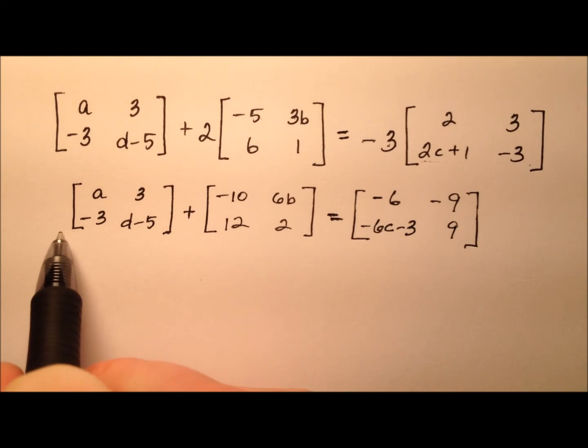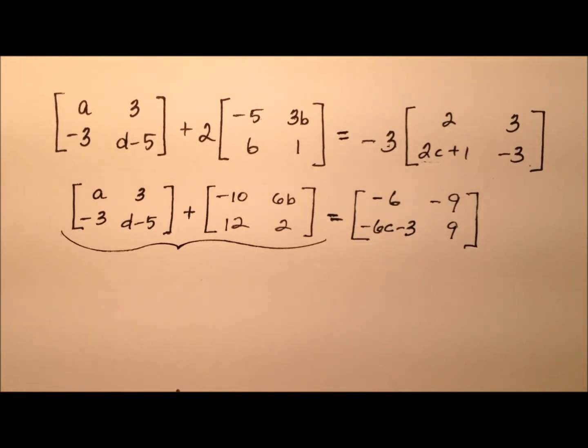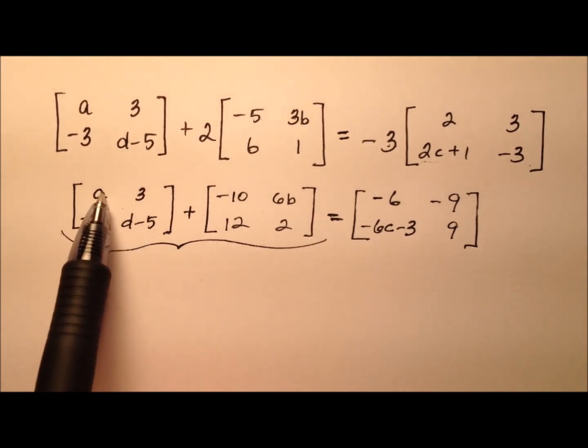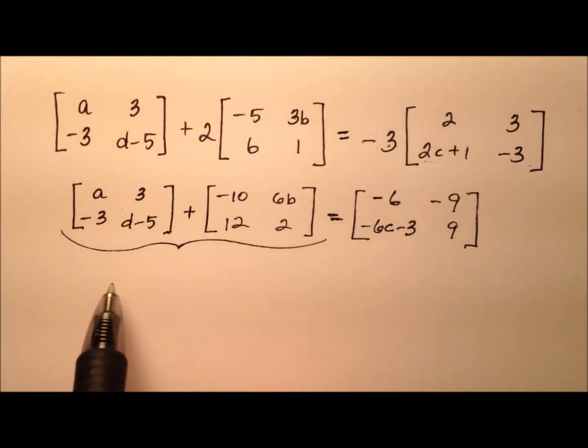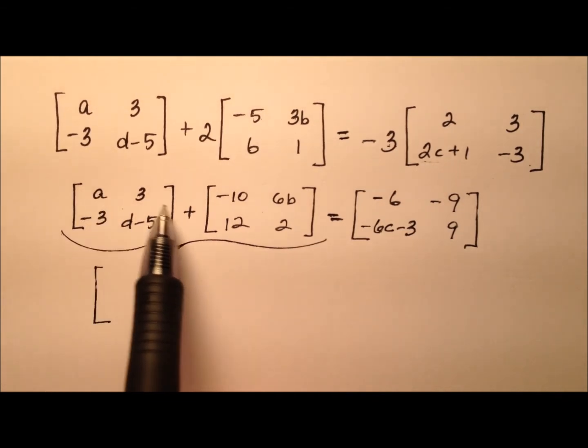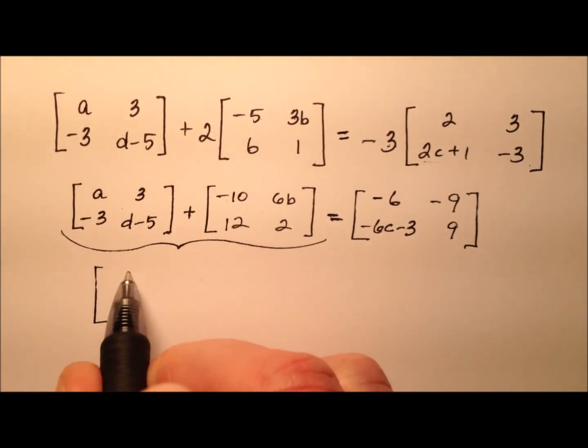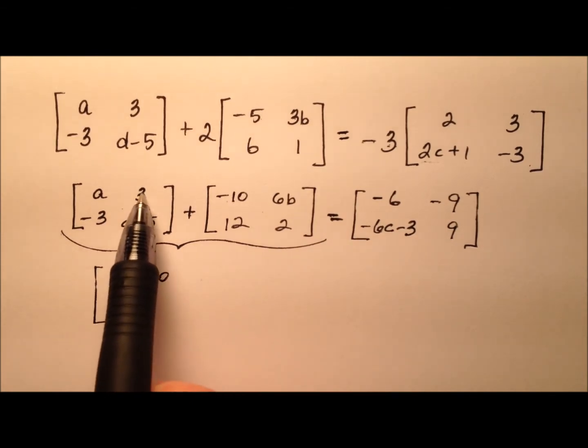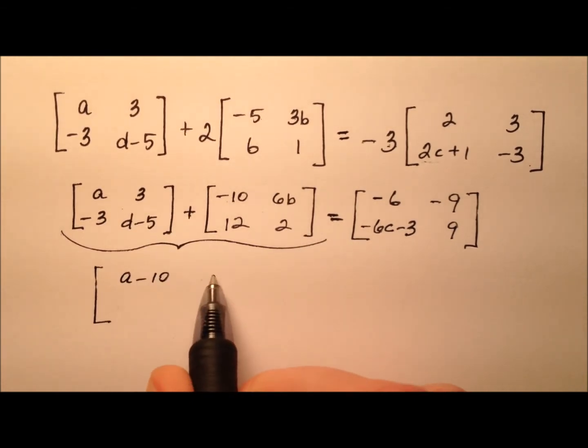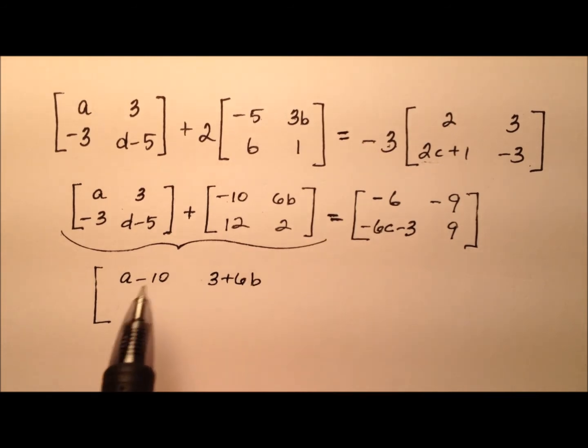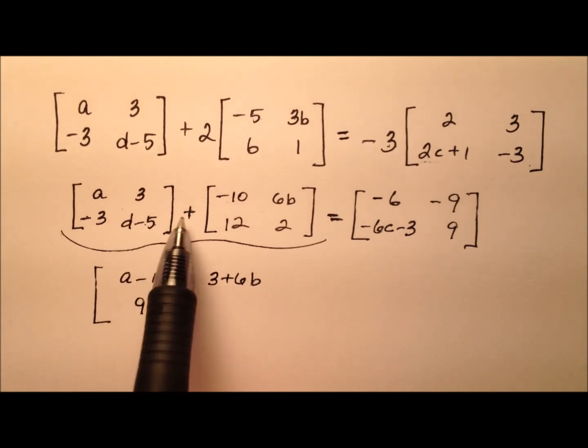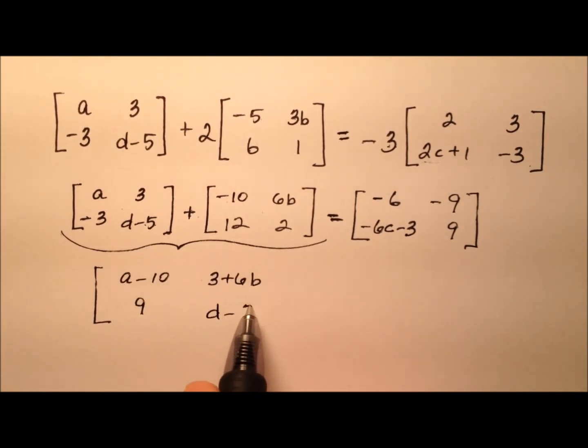So that's what that looks like, and then let's go ahead and actually do the addition here on this 2 by 2 and 2 by 2 matrix. We can add them because they are the same dimensions. So we'll just combine, using addition, all of the corresponding entries. So a plus negative 10 will give us a minus 10, and 3 plus 6B will give us 3 plus 6B, and then negative 3 plus 12 should give us 9, and D minus 5 plus 2 should give us D minus 3.